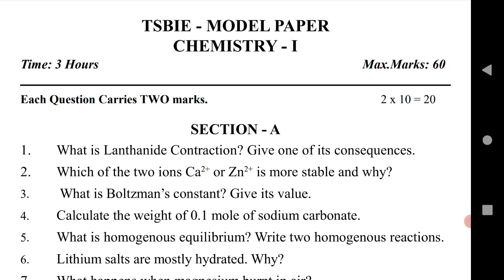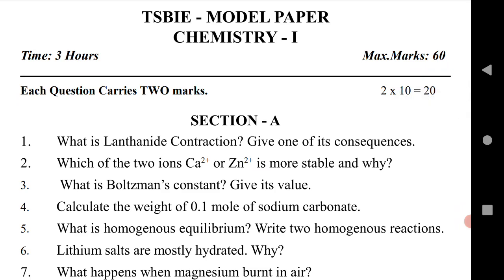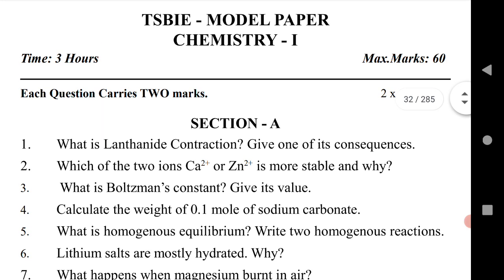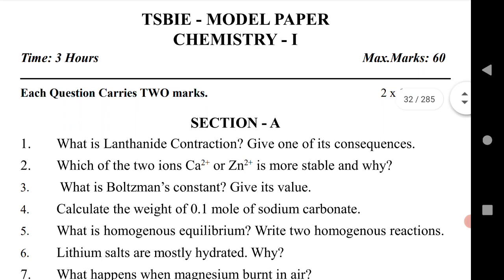In this video we will see three sections: section A, section B, and section C. We know that the chemistry paper consists of three sections. Section A is for VSAQs, section B for SAQs, and section C for LAQs. In this paper compared to last year there are slight changes. You are getting 50% extra options in section B and section C.